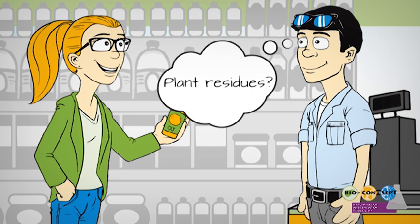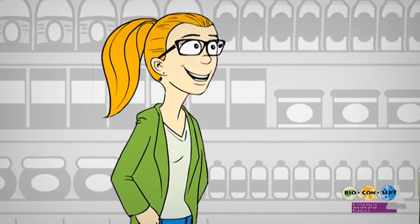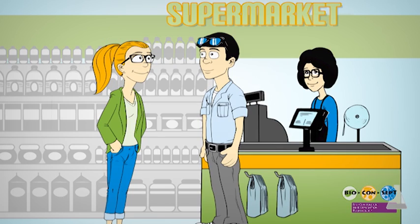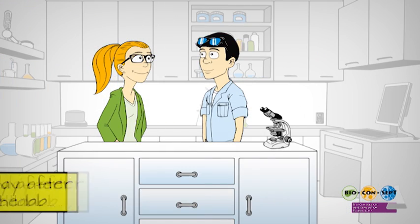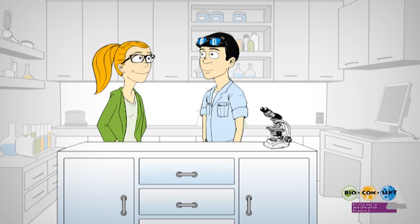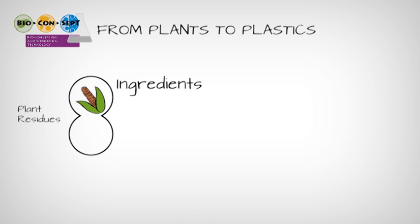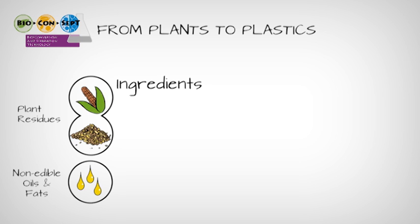Ben is curious what these plant residues might be. Emma is a young scientist developing bioplastics made from plant residues in the BioConcept project. The next day, Ben joins Emma in the lab. There are two types of ingredients for second-generation bioplastics: straw from corn or grain and wood chips, but also non-edible oils and fats from plants. These are called second-generation biomass because they cannot be eaten.